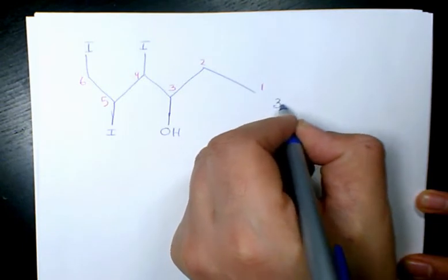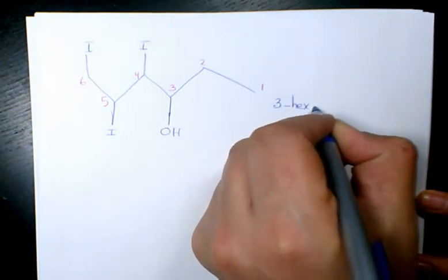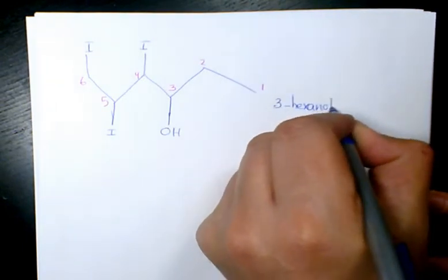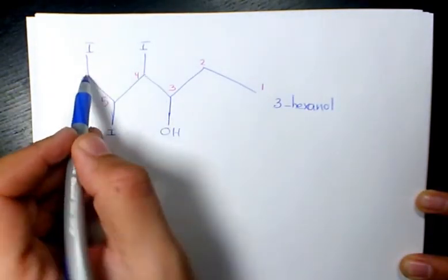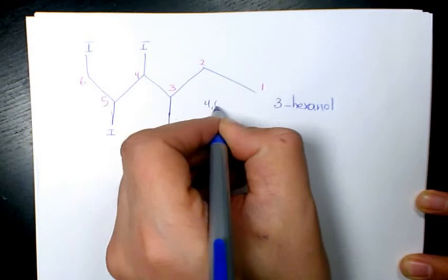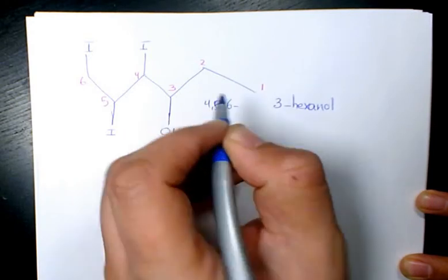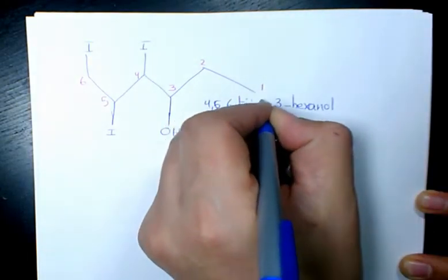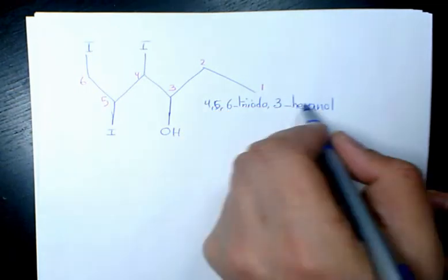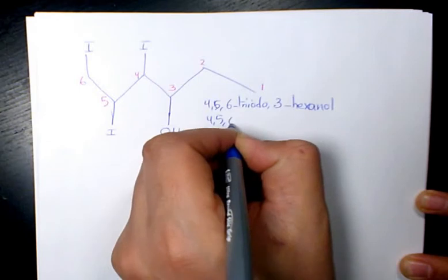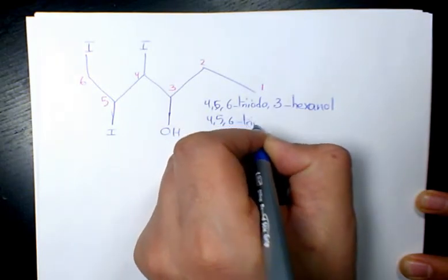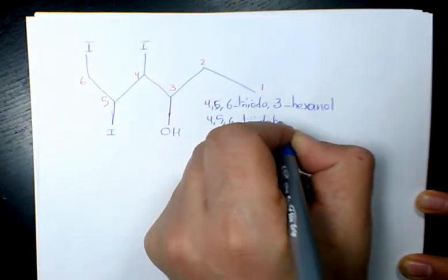4,5,6-triodo-3-hexanol. And here we have 4,5,6-triodo-3-hexanol, or you can say 4,5,6-triodo hexan-3-ol.